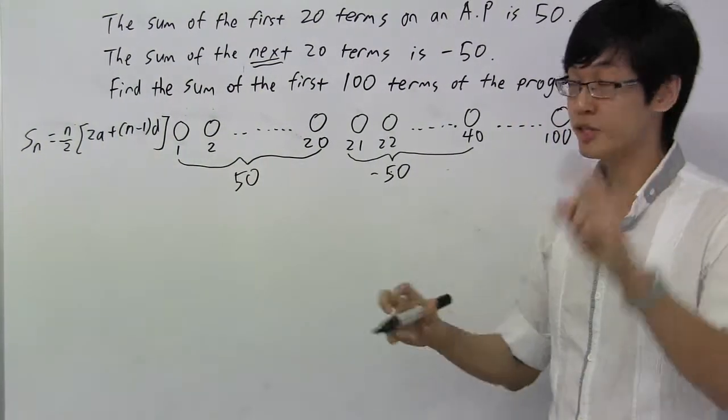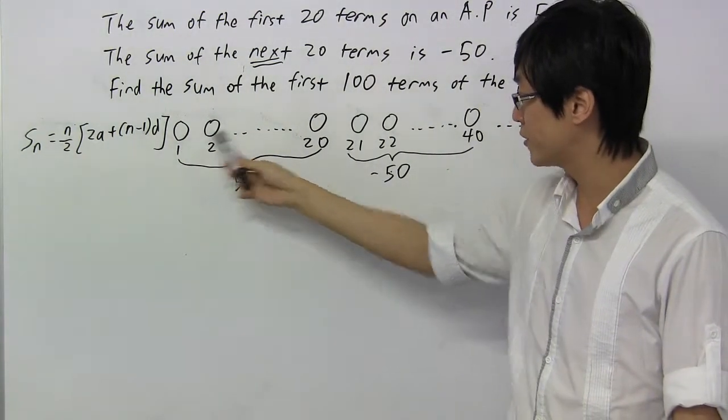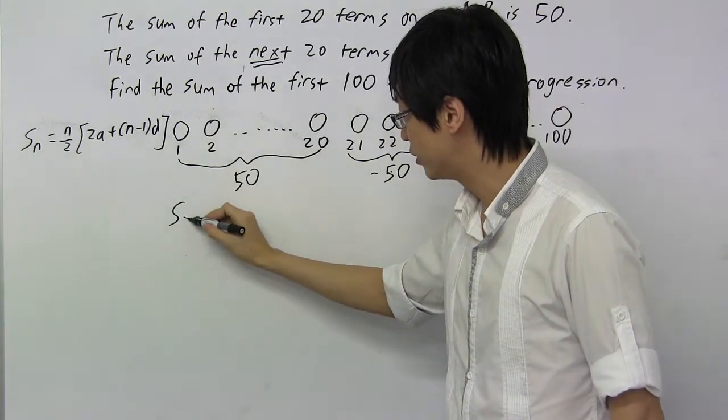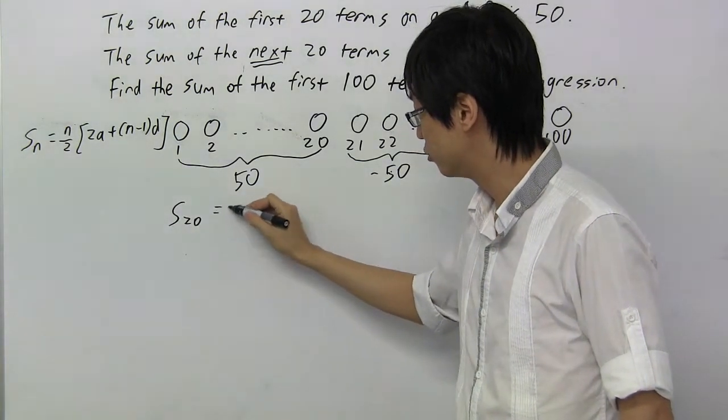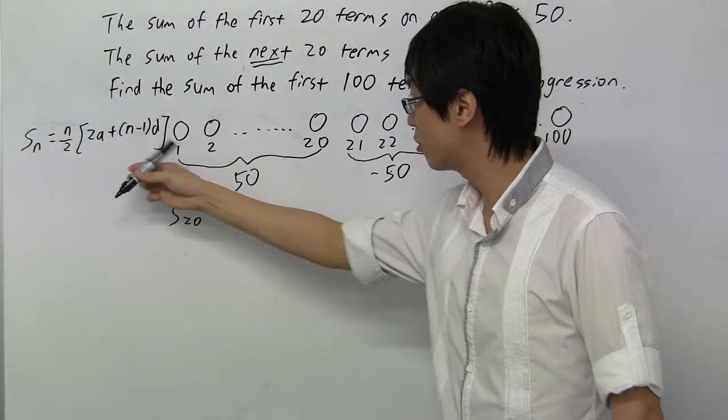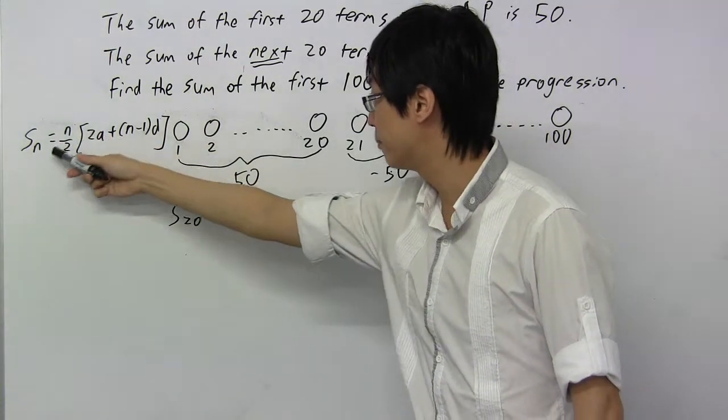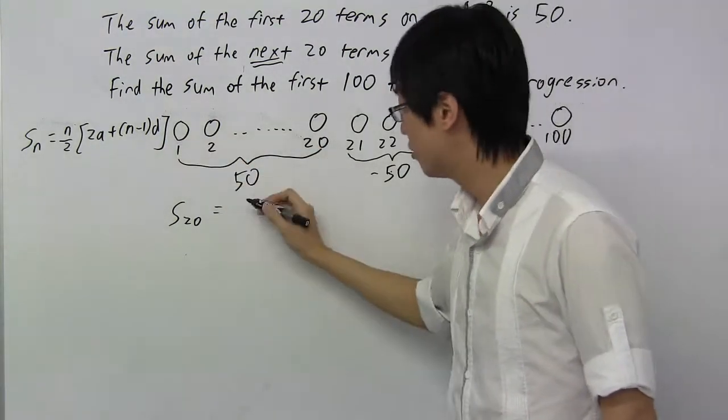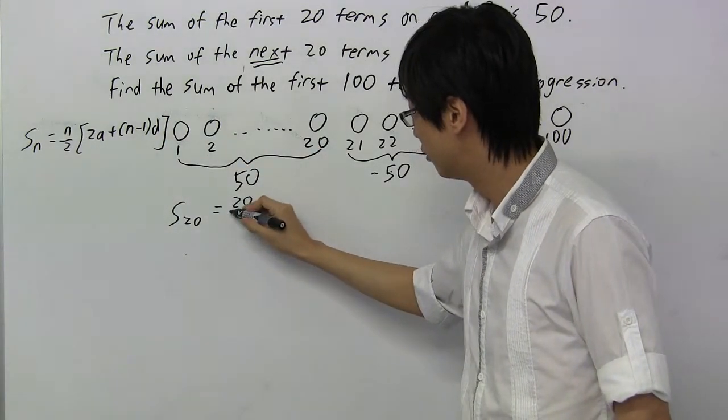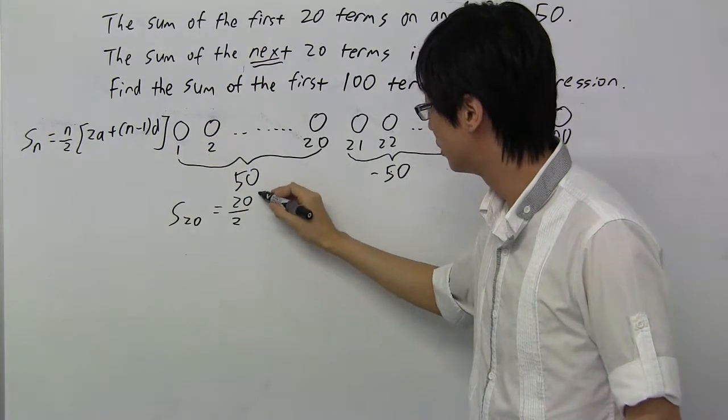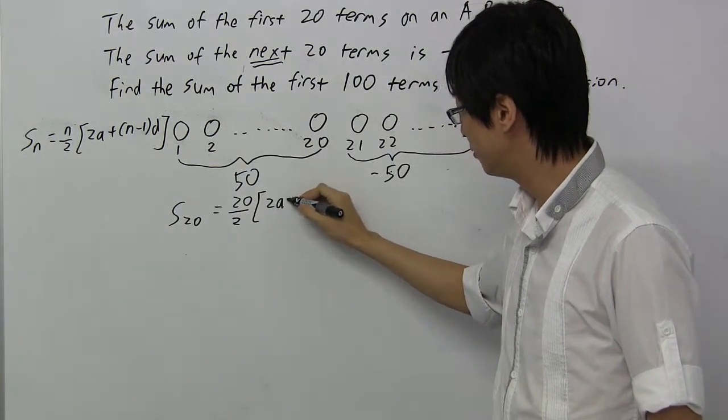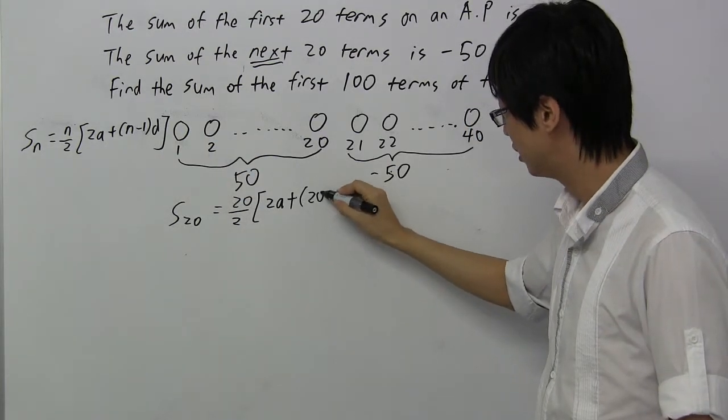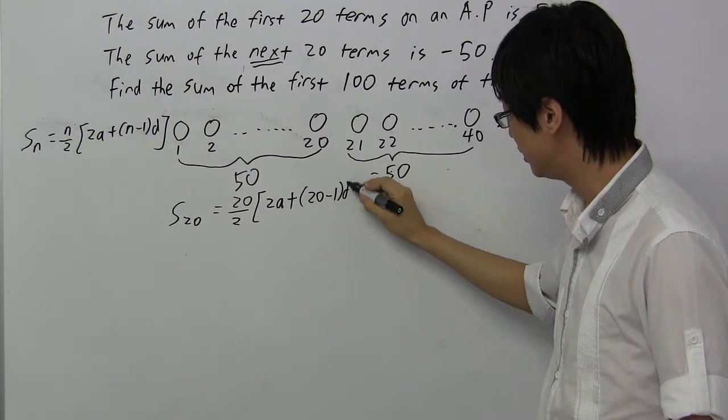And so, let's generate the first equation. We know that the sum of the first 20 terms is 50. And so, S20 equals to, I replace my N by 20, because there are 20 terms in total. So I'll get 20 over 2, 2A plus sub-20 inside. So I'll get 20 minus 1D.